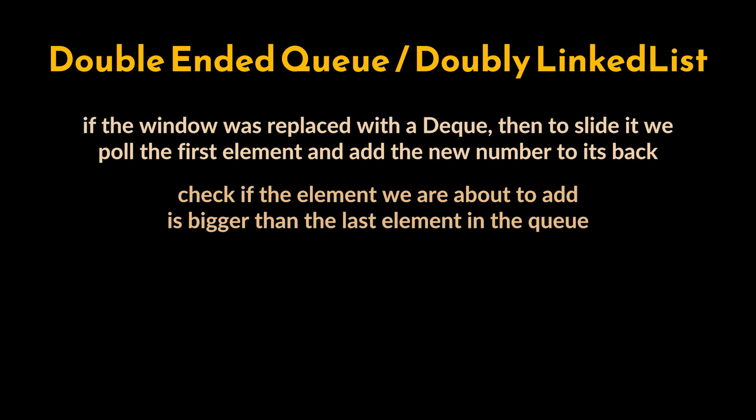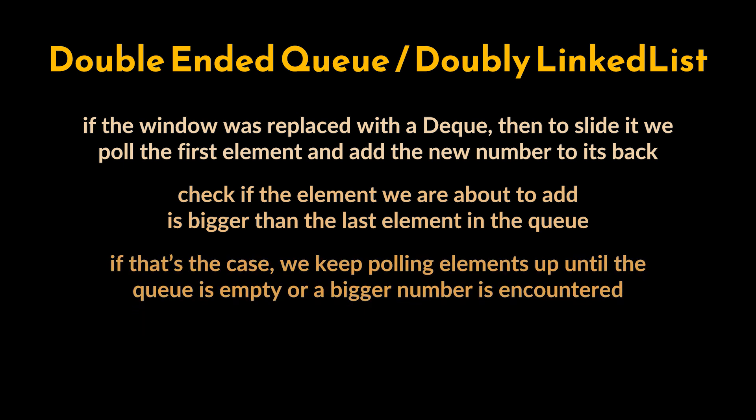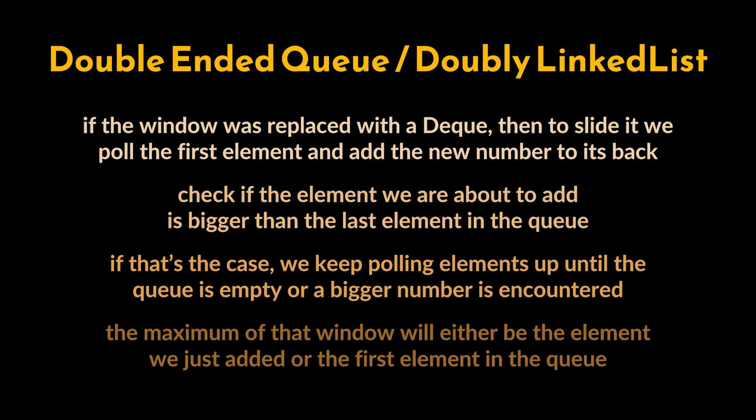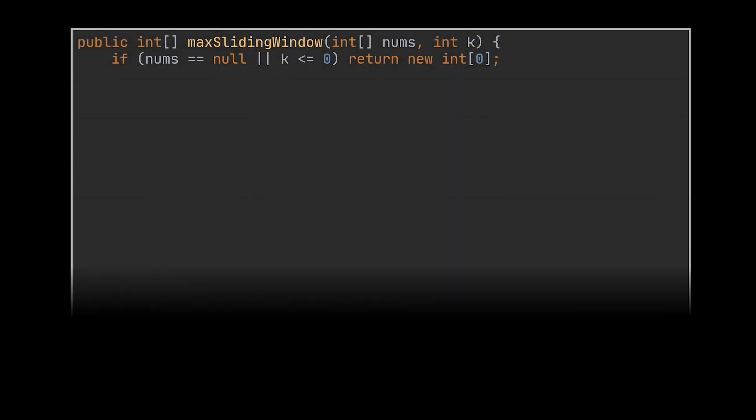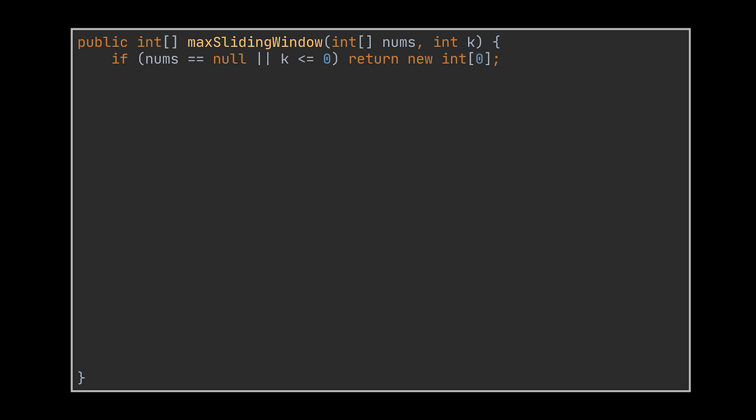Since we have access to the first and last elements in constant time, we can check if the element we are about to add is bigger than the last element in the queue. If that is the case, we can remove that element and this can be done up until the queue is empty or a bigger number is encountered. The maximum integer of that window will either be the element we just added or the first element in the queue. Let's implement this solution and then go over an example to understand it better.